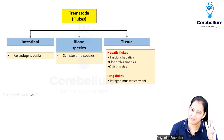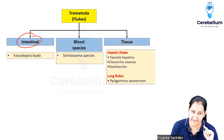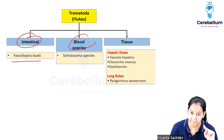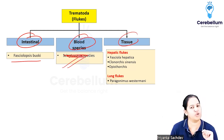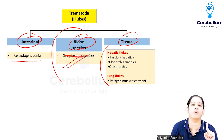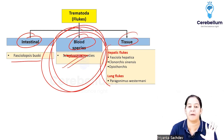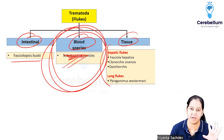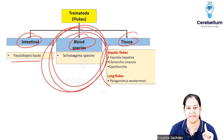In the trematodes, we have three types: intestinal, hepatic (fasciolid), and blood. I will teach you only one trematode which is ultra important - out of the five cysts taught, in trematodes one is ultra important which we will study now.